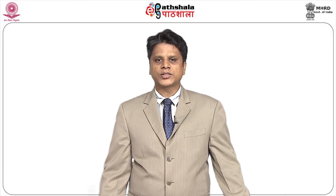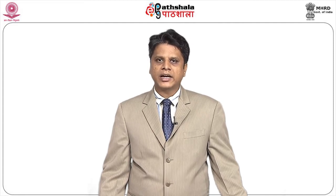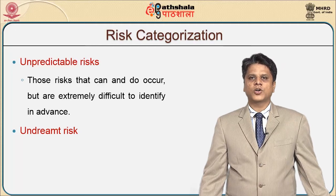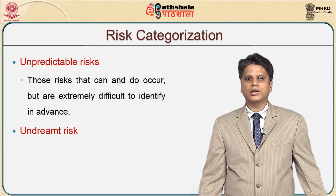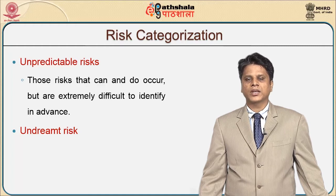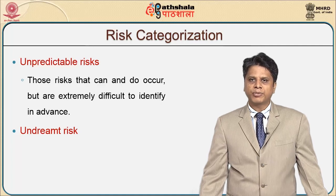We have another risk called predictable risk, wherein in advance we are able to understand and figure out very clearly that there are certain areas which could lead us to a problem. Those risks extrapolated from past project experience — which becomes past turnover — become your predictable risk. The third category is unpredictable risk, where risks can and do occur but are extremely difficult to identify in advance. There are areas where we cannot predict, and we are uncertain about these risks.